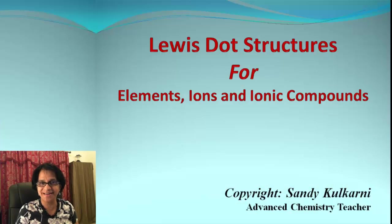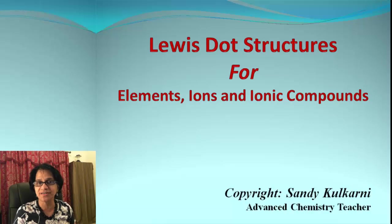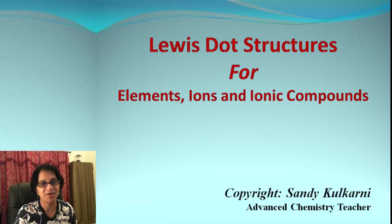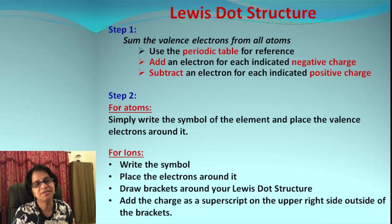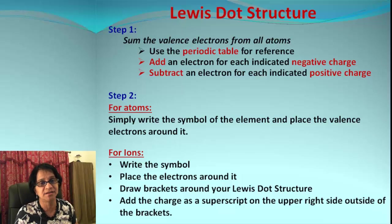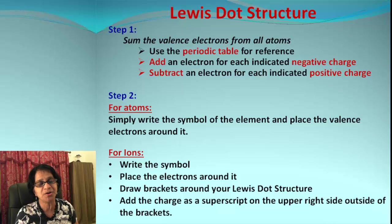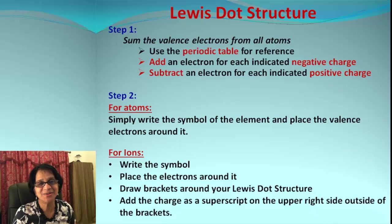Hey kids, Miss Kulkarni here. In this video we will talk about Lewis dot structures for atoms, ions, and also ionic compounds. A scientist named Lewis came up with this idea and he represented every single element — the atom of that element, ions, and also ionic and covalent compounds — in the form of dots around the element. That came to be known as Lewis dot structures.